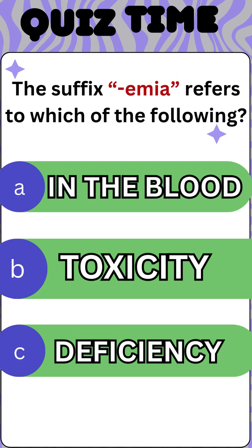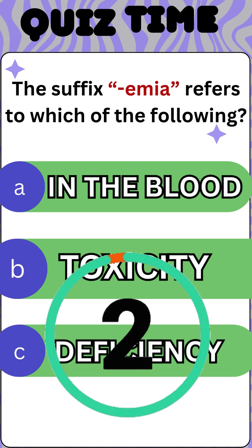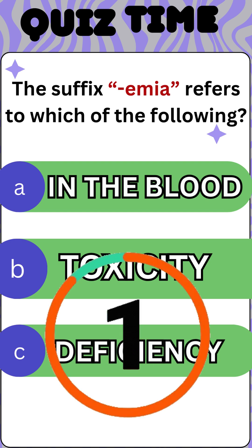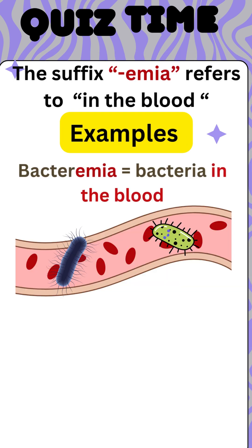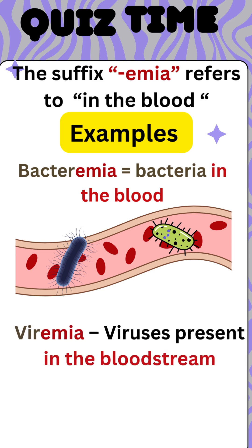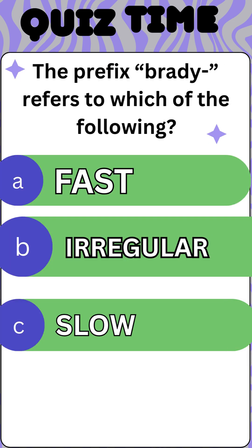Next, the suffix '-emia' refers to which of the following: in the blood, toxicity, or deficiency? The answer is 'in the blood.' For example, bacteremia means bacteria in the blood, and viremia means viruses in the blood.